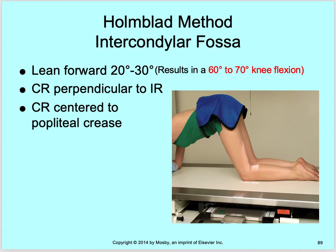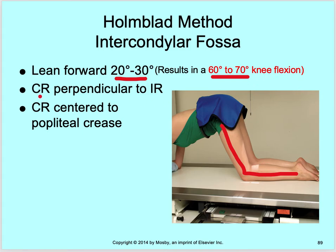The Holmblad method for the intercondylar fossa: the patient leans forward about 20 to 30 degrees from 90, which puts the knee in 60 to 70 degrees of flexion. Central ray is perpendicular to the image receptor — zero degree, perpendicular — centered at the popliteal crease. Make your exposure and you'll see that intercondylar fossa.